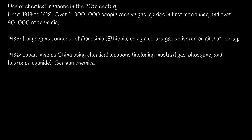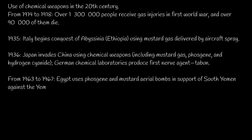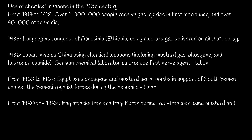In 1936, Japan invaded China using chemical weapons including mustard gas, phosgene, and hydrogen cyanide. German chemical laboratories produced the first nerve agent, Tabun. From 1963 to 1967, Egypt used phosgene and mustard aerial bombs in support of South Yemen against the Yemeni royalist forces during the Yemeni civil war.